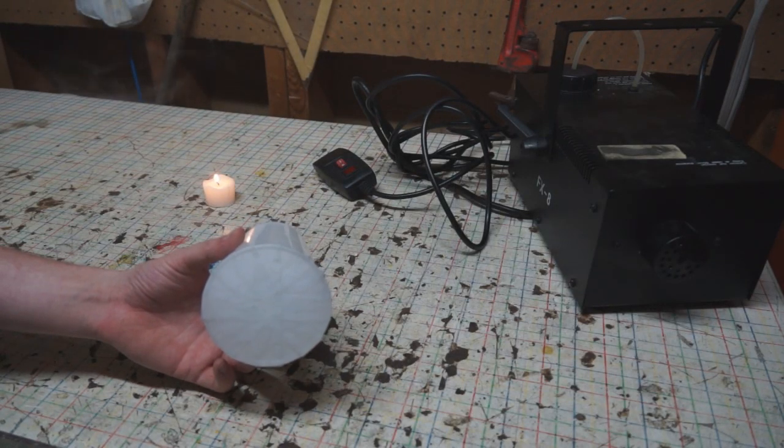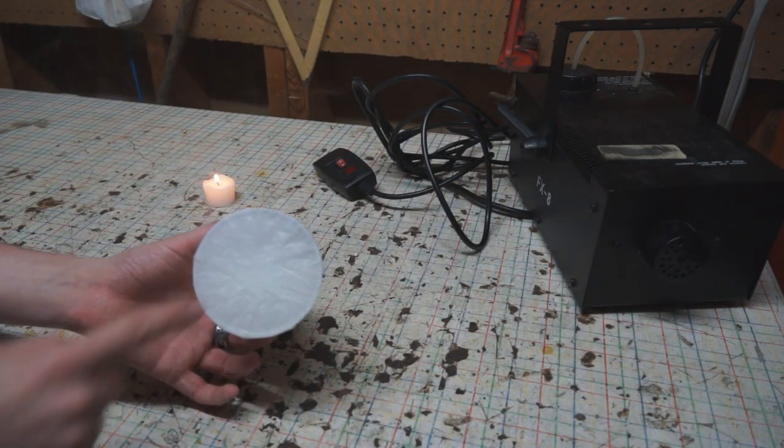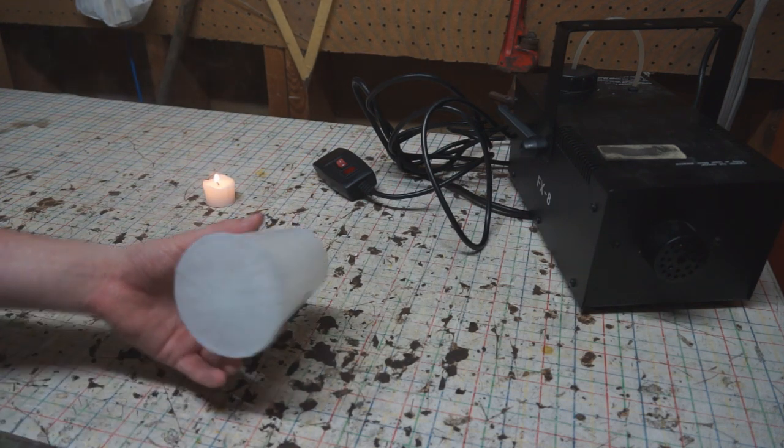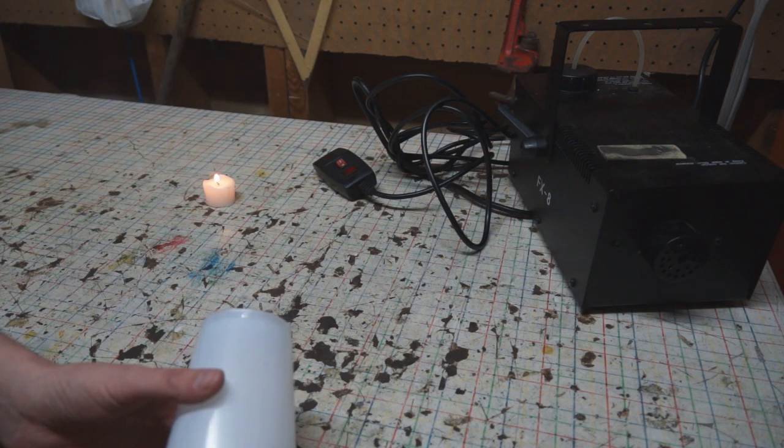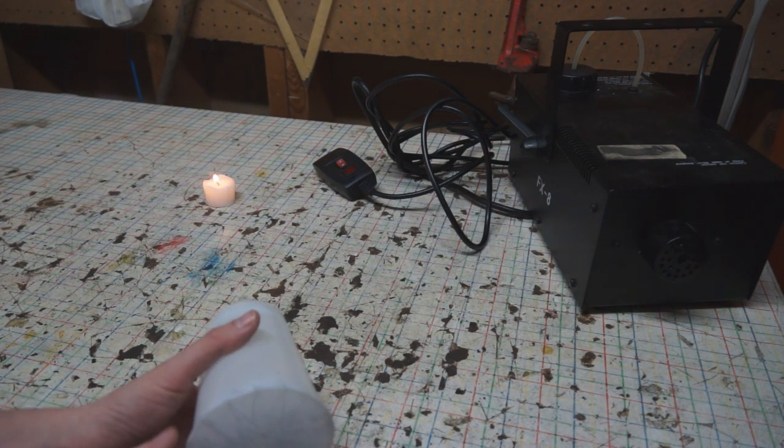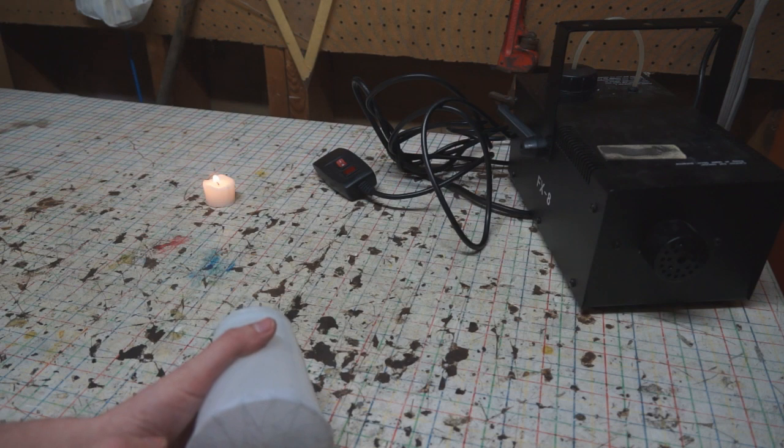You can make a compact portable version of the smoke ring generator by taping up the open end of a plastic cup and putting a hole in the bottom. Just tapping that tape will cause smoke rings. If you tap it hard enough it can even blow out candles at a distance.